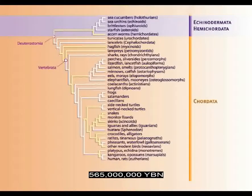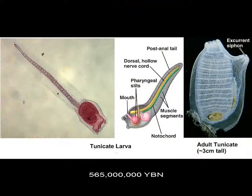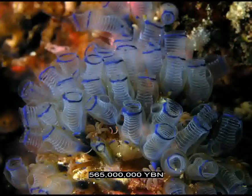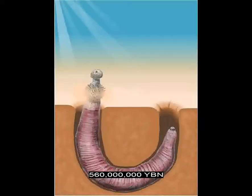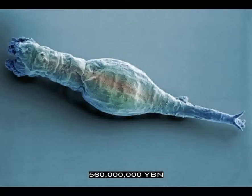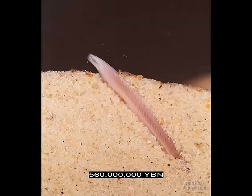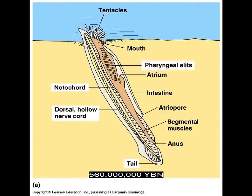Deuterostome phylum Chordata evolves. Chordates are a very large group that includes all tunicates, fishes, amphibians, reptiles, mammals, and birds. Earliest extant chordate — tunicates evolve, sea squirts. Protostomes Ecdysozoa — animals that molt, losing their outer skin as they grow. Protostomes Lophotrochozoa evolve. First fish — earliest extant fish: lancelets. First liver and kidney. Start of small shelly fossils.